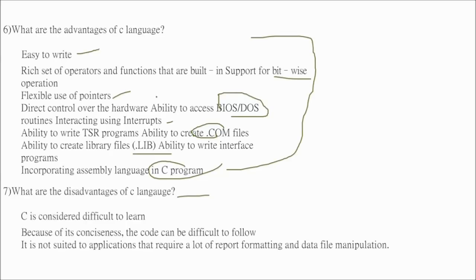What are the disadvantages of C language? Difficult to learn somewhat. And because of its conciseness the code can be difficult to follow. And this is not suitable to applications that require lot of report formatting and data file manipulation.